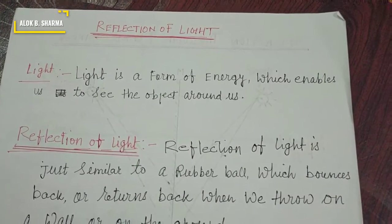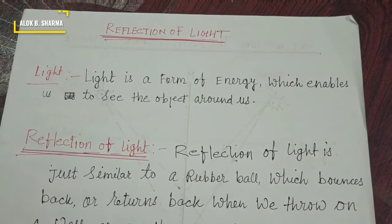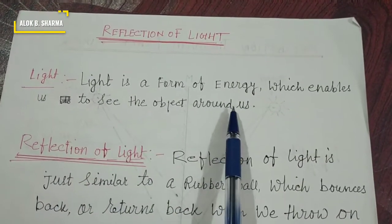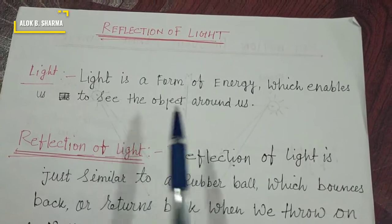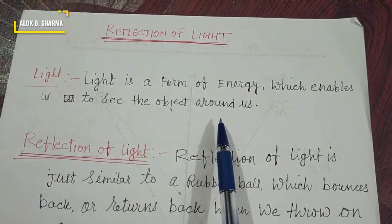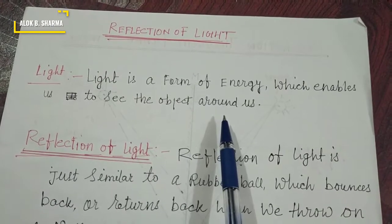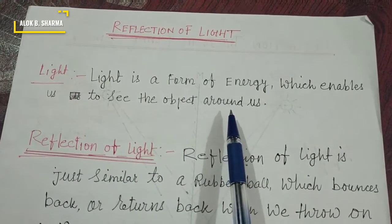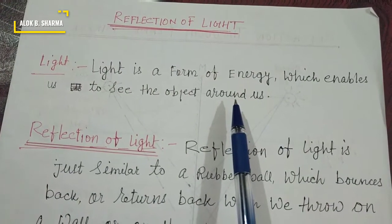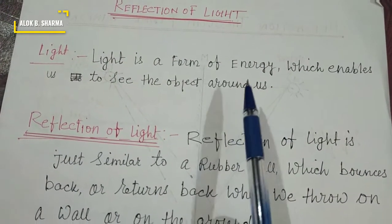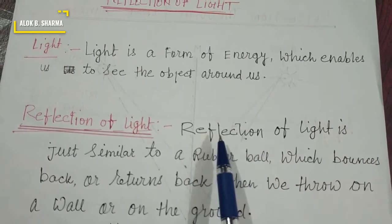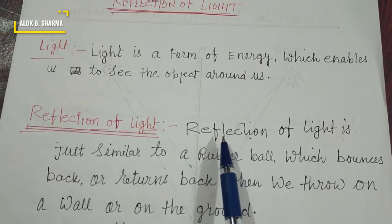First, you should know what light is. Light is a form of energy which enables us to see the objects around us. Where there is no light, we cannot see objects. This is the source through which we can see the objects — this is the definition of light.